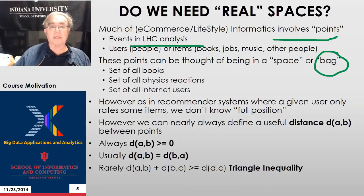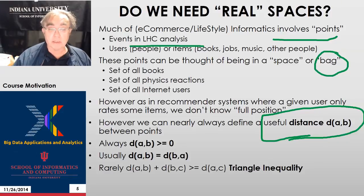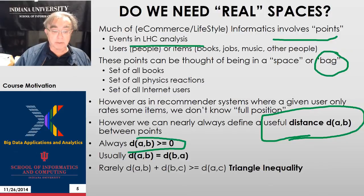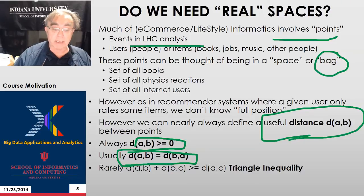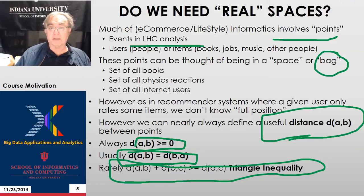A given document is represented by the words in the document and the number of times each word appears. In almost all these problems you're looking at nearness of items — is a given event near another Higgs event in some space? Is a movie likely to be one I'd watch because it's near another movie I watched? We always choose distances which have some properties: distances are bigger than zero, and the distance from A to B equals the distance from B to A. But they don't have the triangle inequality, which some clever methods rely on — those will not work in these fancy spaces.